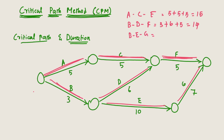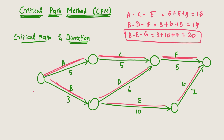For path B-E-G: 3 + 10 + 7 = 20 days. The path containing the maximum duration is B-E-G, so B-E-G is the critical path. If any delay happens in activity B, E, or G, the entire project duration will be delayed. That's why it is called the critical path — critical means it is a very crucial one.